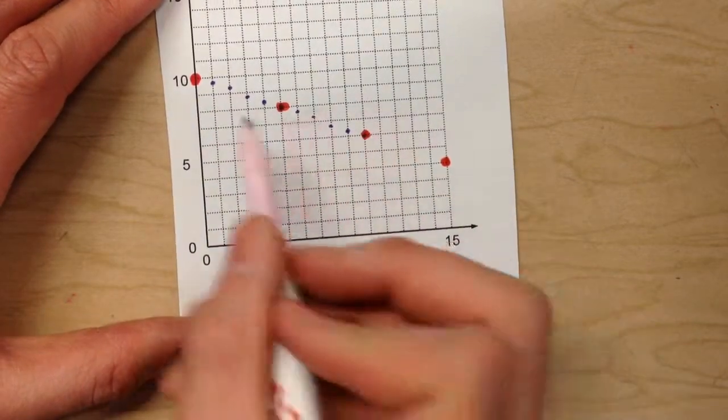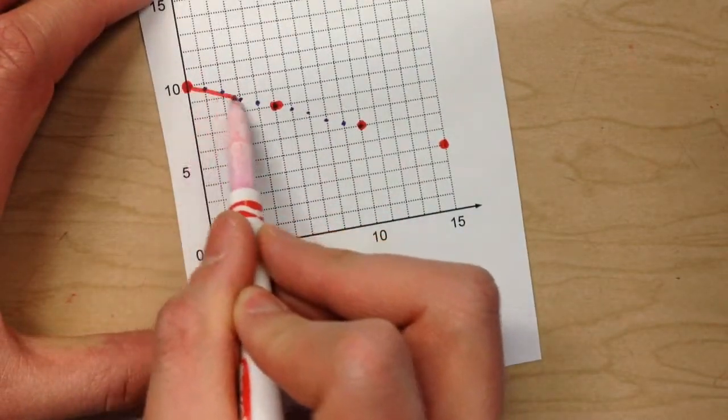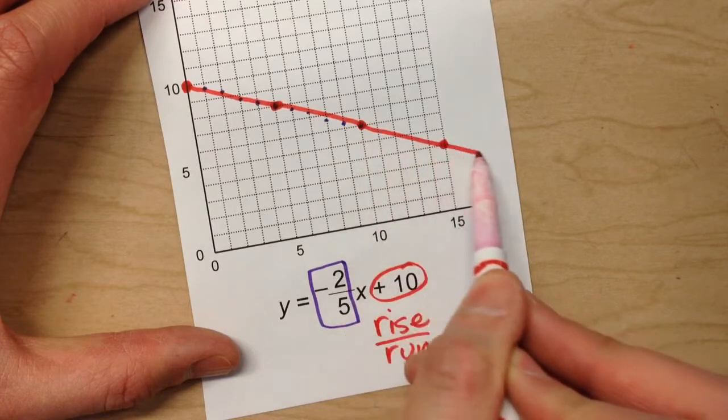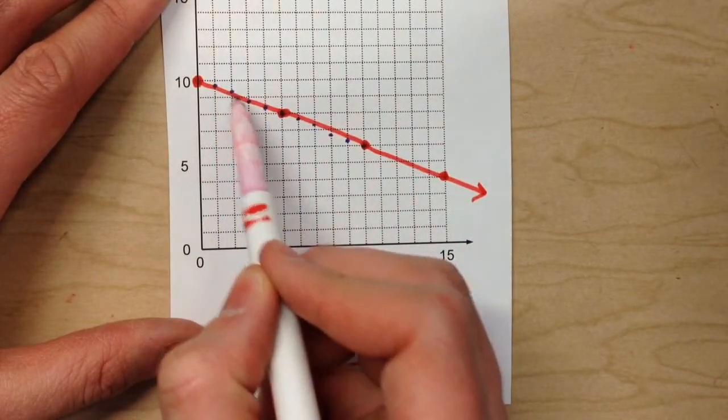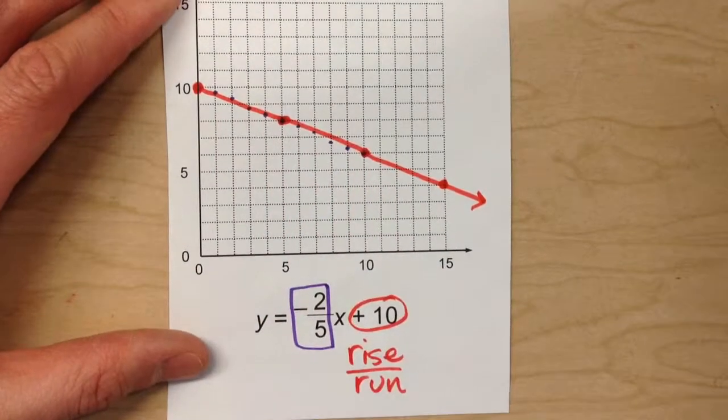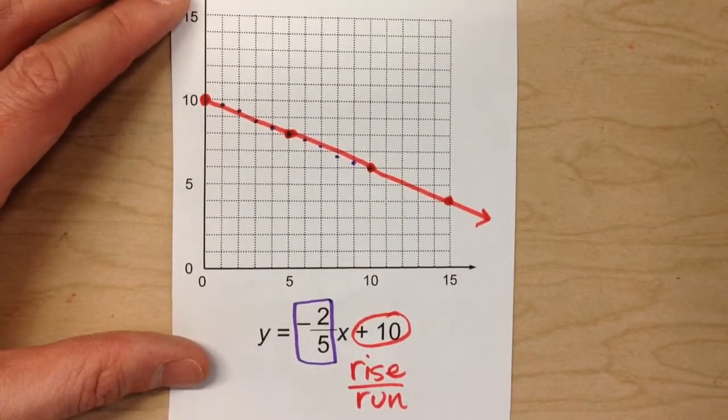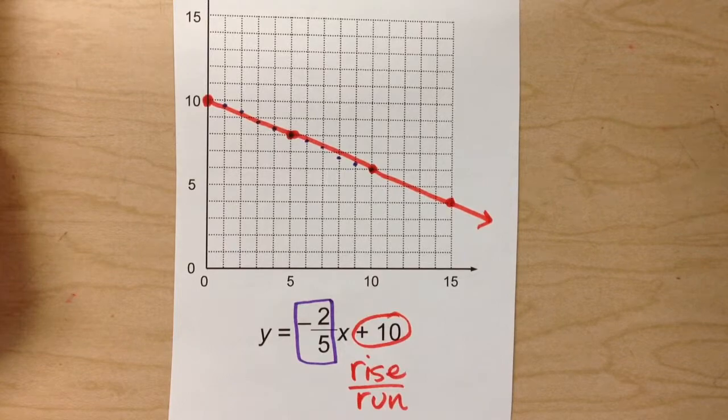And as you can see, the line that forms using that rise over run pattern is the exact same line that would have been formed if we went down 2 fifths the entire time. And that's how you graph the equation.